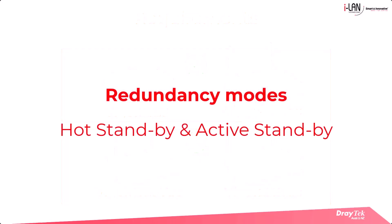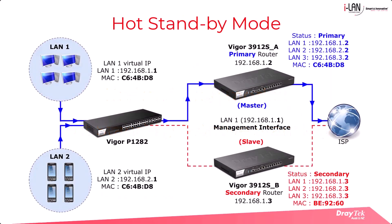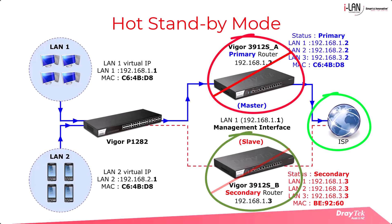Draytek routers offer two redundancy modes. The first is hot standby mode, where both the primary and secondary routers share the same WAN source. During normal operations only the primary router is active. If the primary router goes down, the secondary router takes over using the same WAN connection, ensuring uninterrupted internet access.